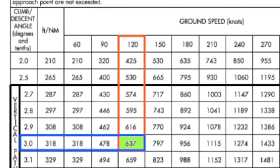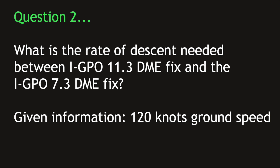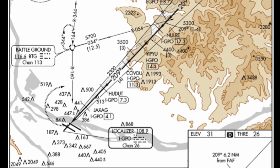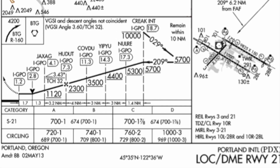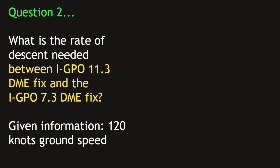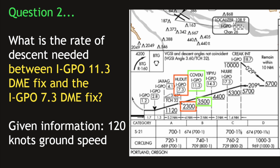Not too bad. Unfortunately, I will have to keep sharing more sample problems that are not all solved this same way. Here we will be referring to a different approach plate, but working with the same ground speed of 120 knots per hour. We will again be taking a closer look at the profile view section towards the bottom left. The question asks about a specific position between the IGPO 11.3 DME fix and the IGPO 7.3 DME fix.